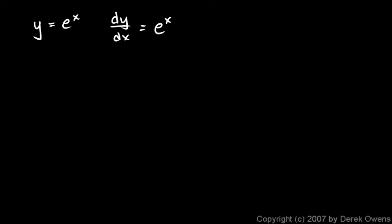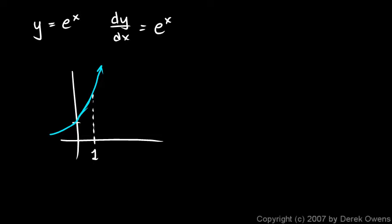The exponential function y equals e to the x is its own derivative. If we were to graph this, the function would cross the axis at 1, and then it grows very rapidly. By the time you get to x equals 1, you're up to a value of e, about 2.718. At x equals 0, the function has a value of 1 and also has a slope of 1. At x equals 1, the function has a value of 2.718 and also a slope of 2.718. This function is its own derivative, and constant multiples such as y equals a·e^x — like y equals 3e^x or y equals 5e^x — would also be their own derivative. That's the only class of functions with this property.